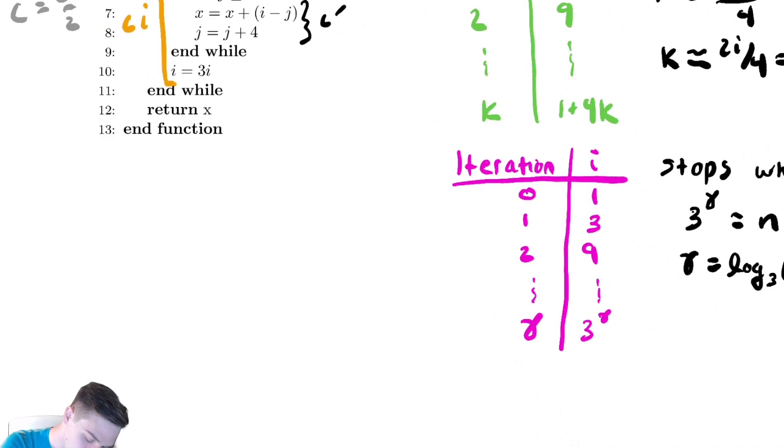So t of n is equal to, we're going to do something similar to our last while loop problem that we saw, where we are going to use the values of i from our second iteration table, the one here in pink, and plug those into the cost of a single iteration of the outer while loop. So what do I mean by that? Well, the cost of the first run would be c times i, and i starts at 1.